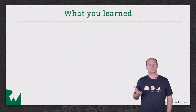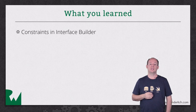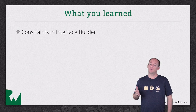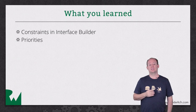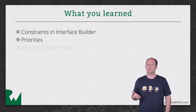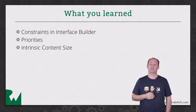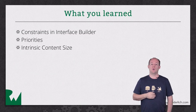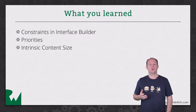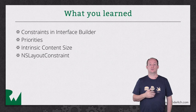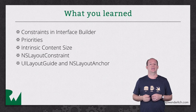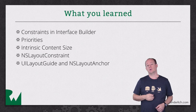In this series, you learned all about working with constraints in Interface Builder. We talked about priorities and how to use them to add some power to your layout. You learned about intrinsic content size and the automatic constraints that get added for you when a view knows about the size of its content. Then we talked about working with constraints in code, creating NSLayout constraints directly, and using the new UI Layout Guide and NSLayout Anchor to make things simpler and more readable.